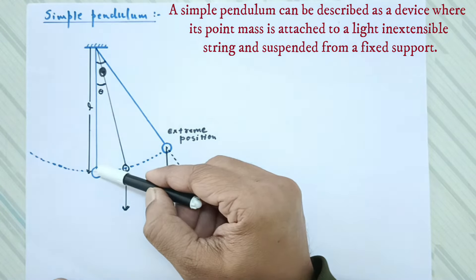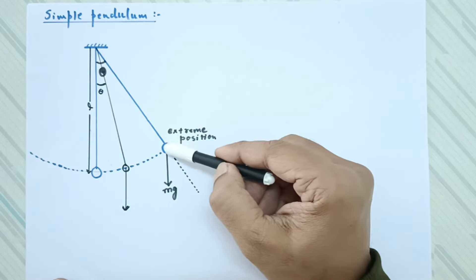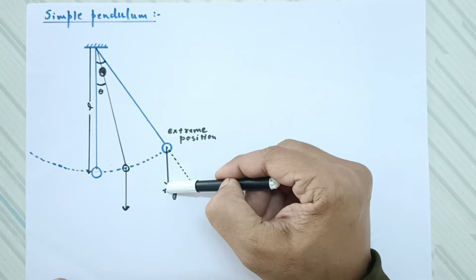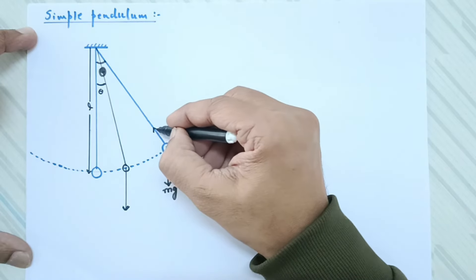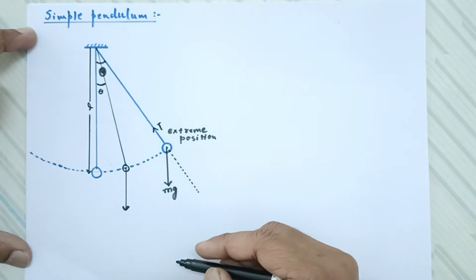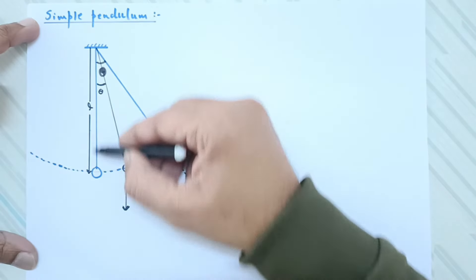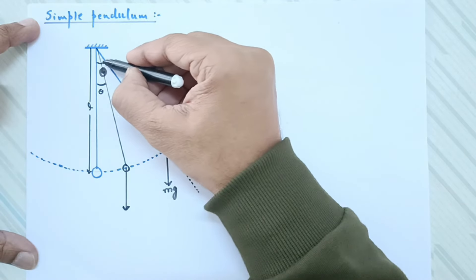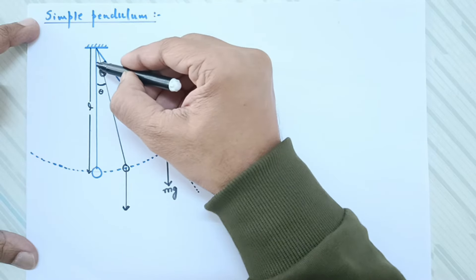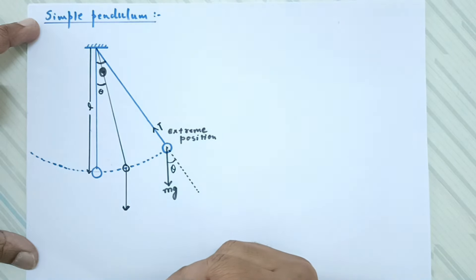The pendulum starts oscillating and reaches the extreme position. The weight is always vertically downward. The tension in the string acts along the string. The string was vertical at the mean position, and now at the extreme position it makes an angle. This angle is angle theta. This angle and the corresponding angle are equal — both are theta.